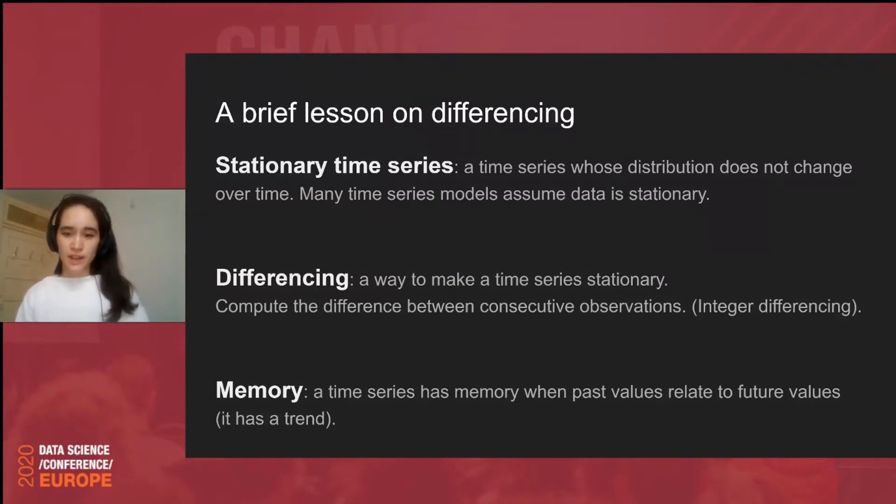So, all models, they have assumptions and stationarity is an assumption for many of these time series models. So, given that stock prices are a time series and we need to have a stationary time series in order to use the standard machine learning and time series models, we can do what's called differencing. So, differencing is a way in which you compute the difference between consecutive observations. And specifically, this is called integer differencing. The resulting time series, the differenced one is stationary.